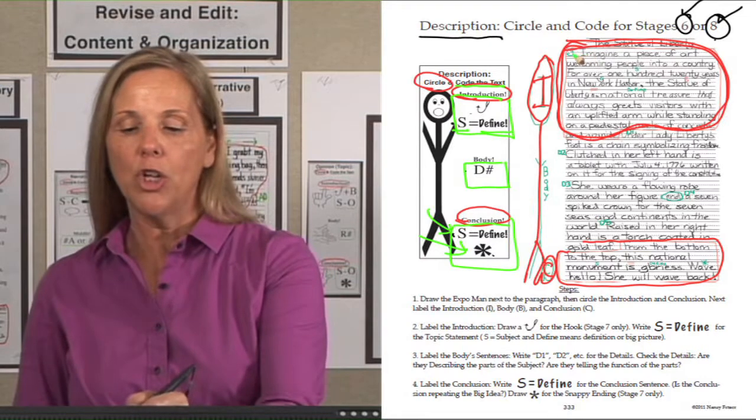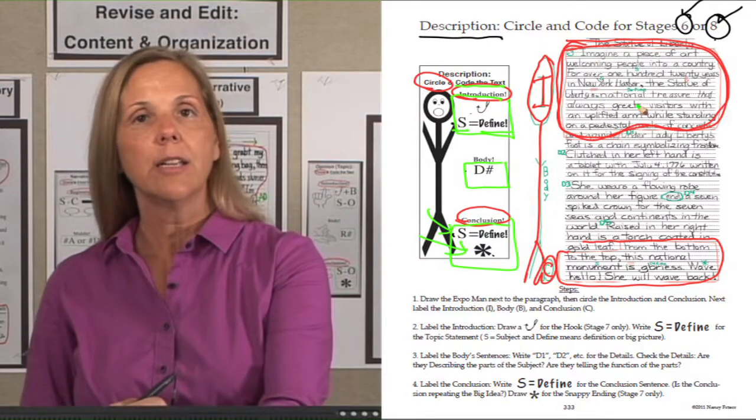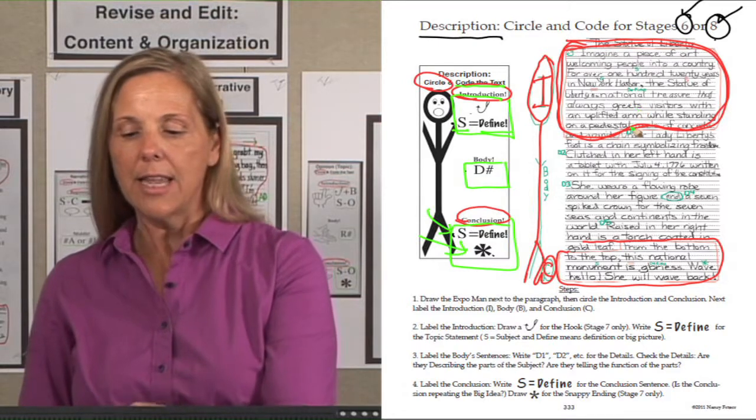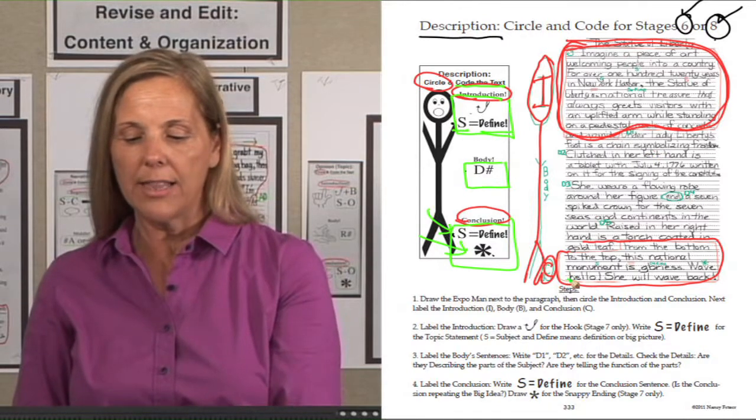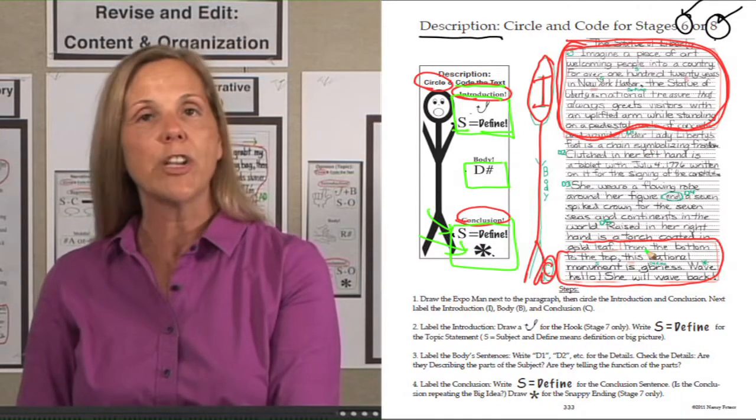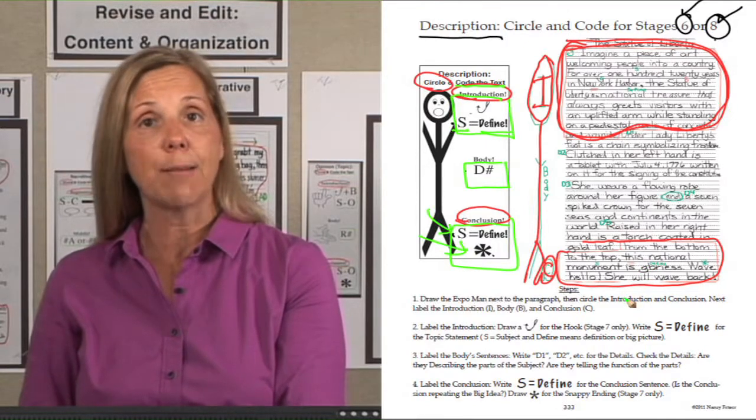They went up, they labeled the hook, they labeled their subject, equal sign, define. Then they went to the body and they had their details that they numbered. And finally they went to the conclusion in which they identified their subject, their definition and the snappy ending.